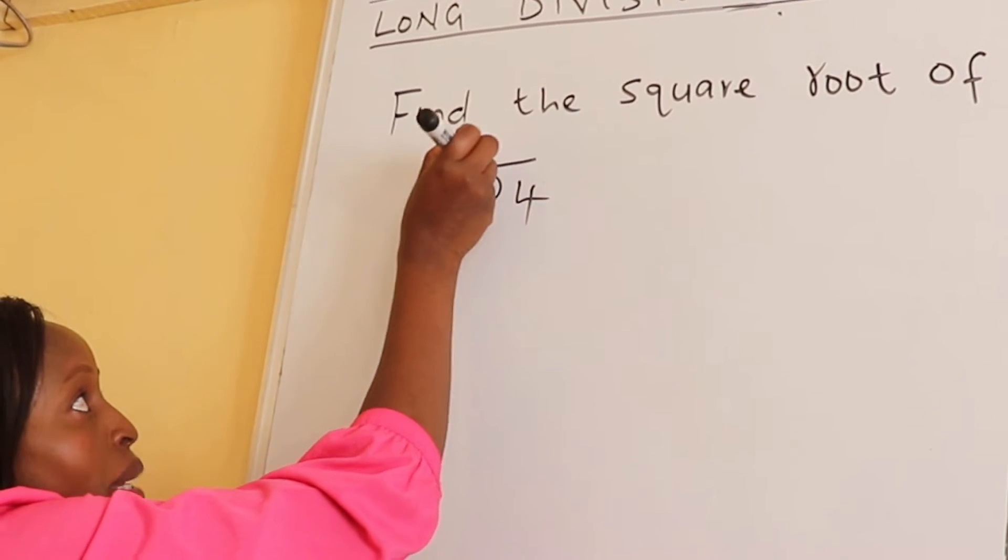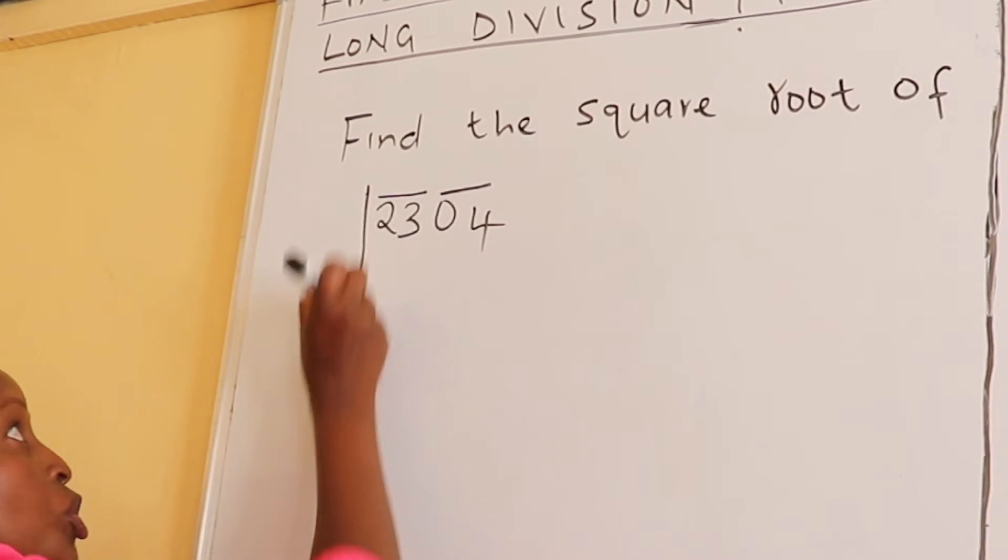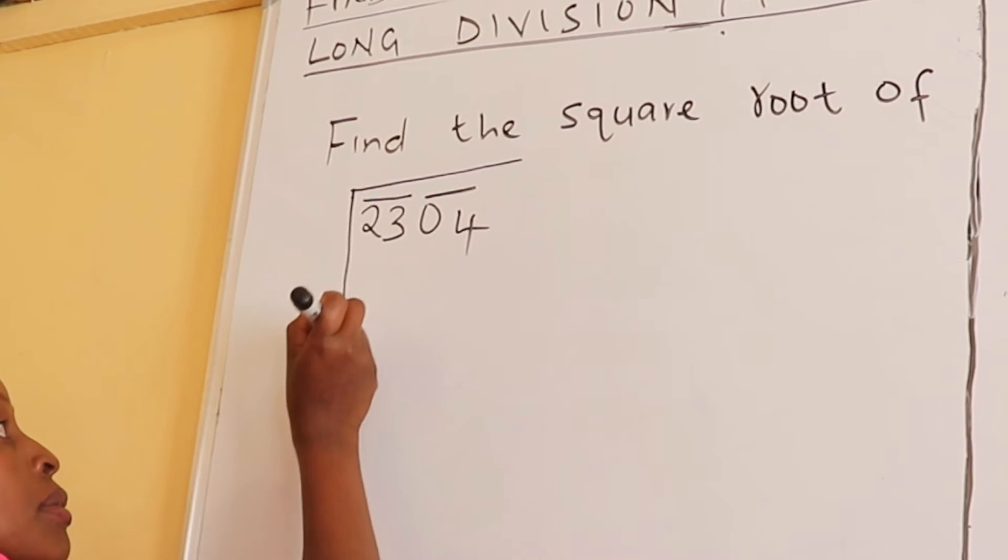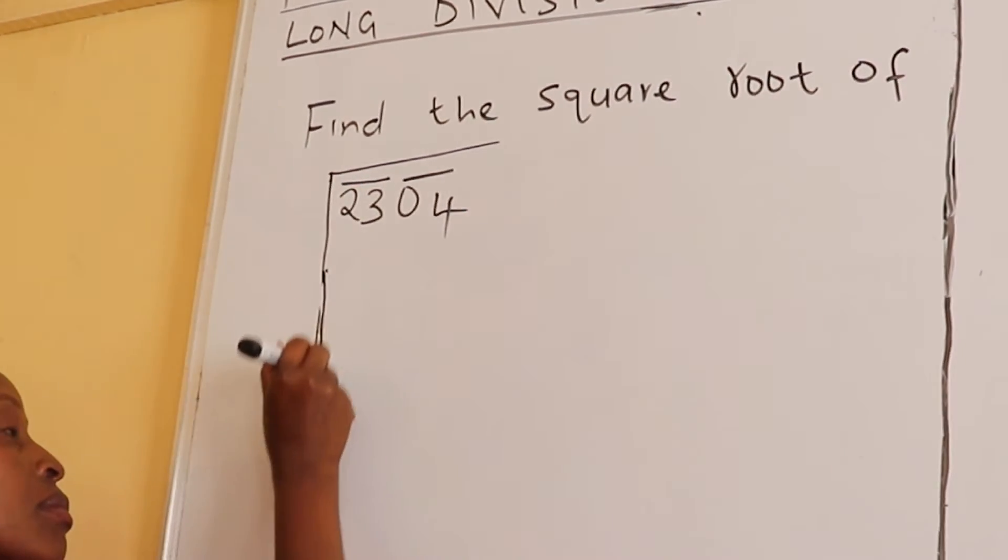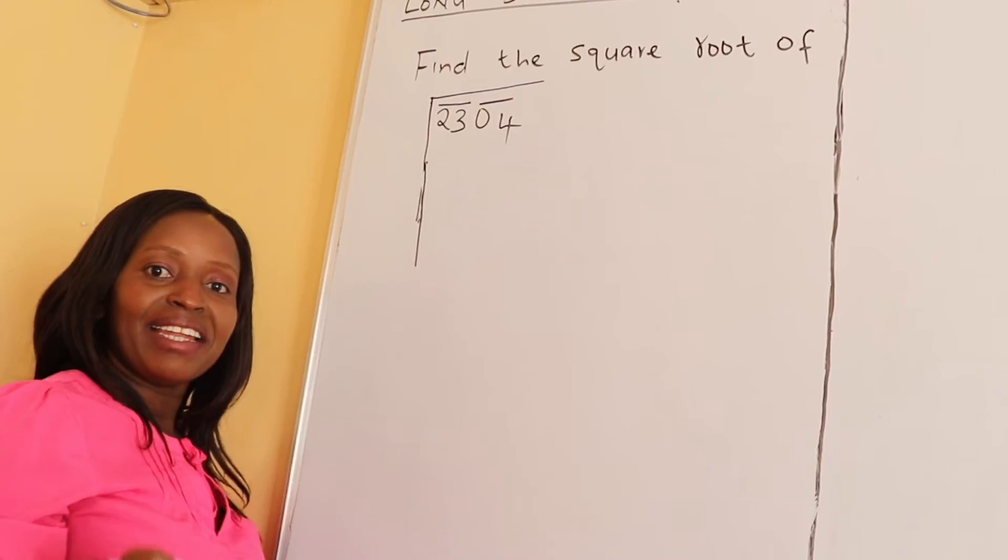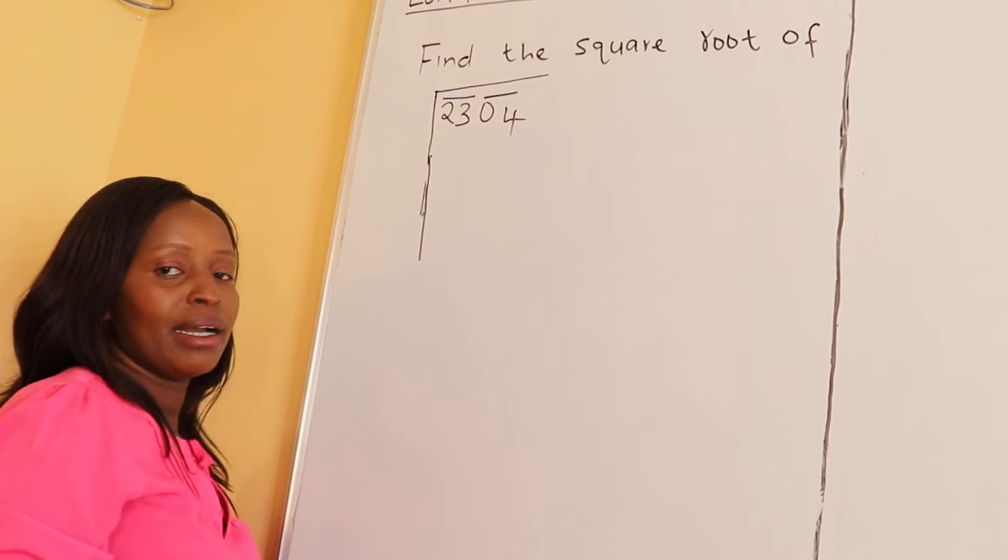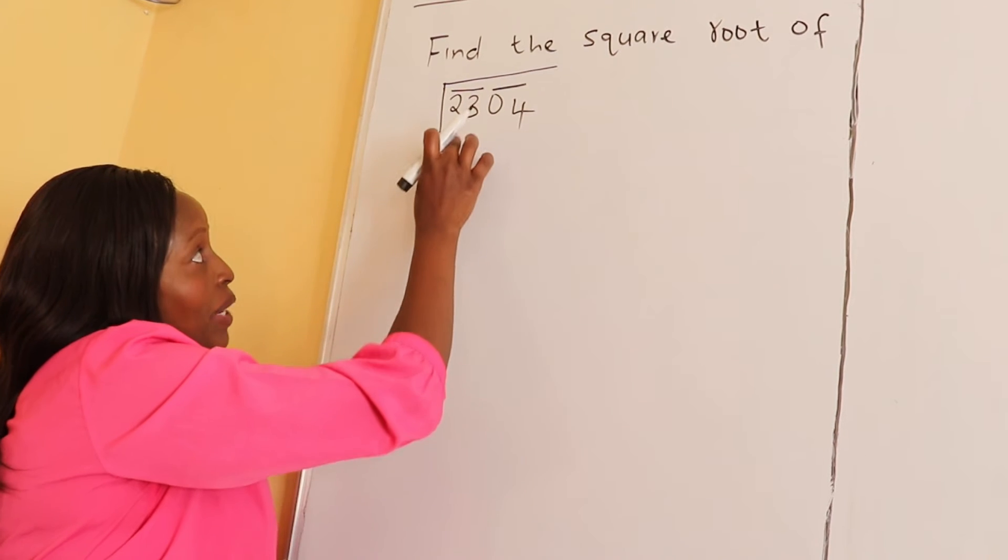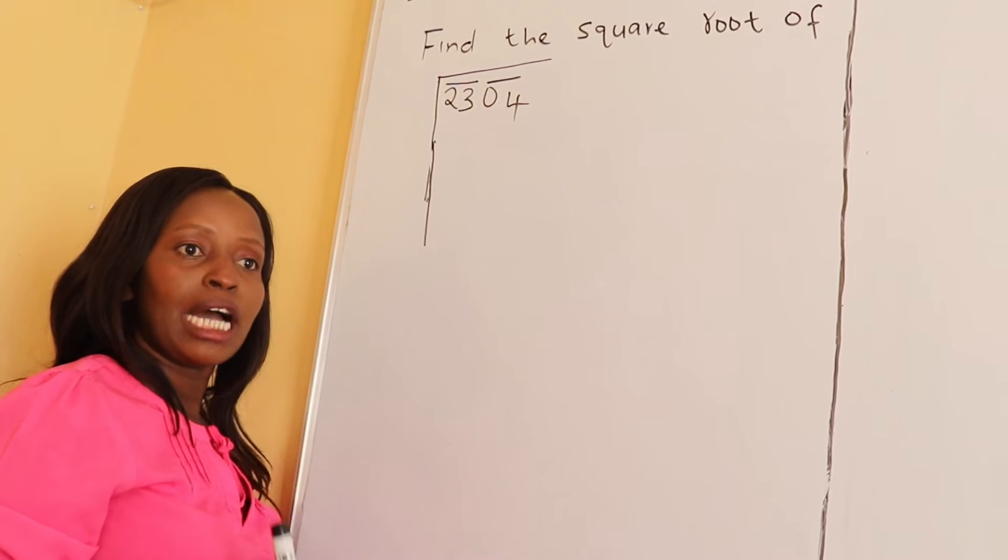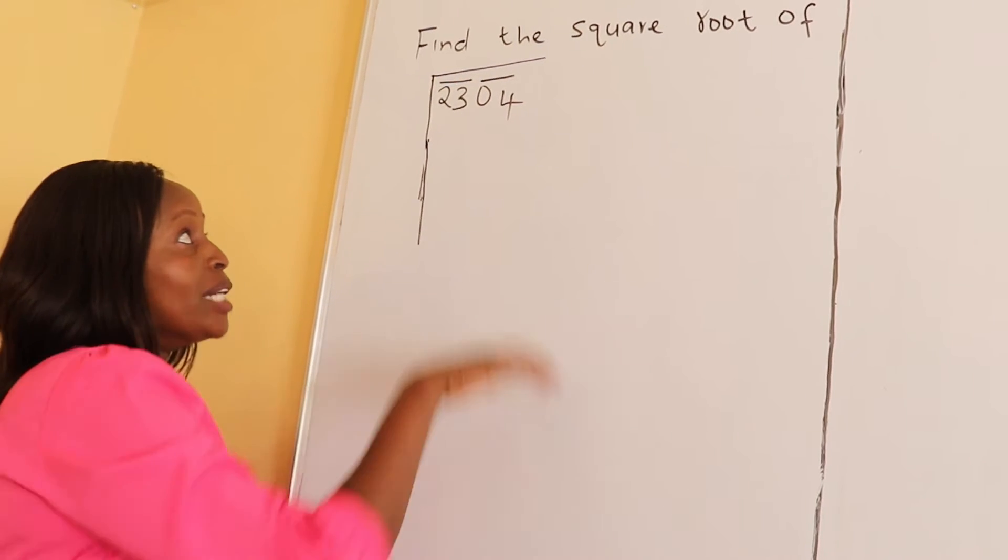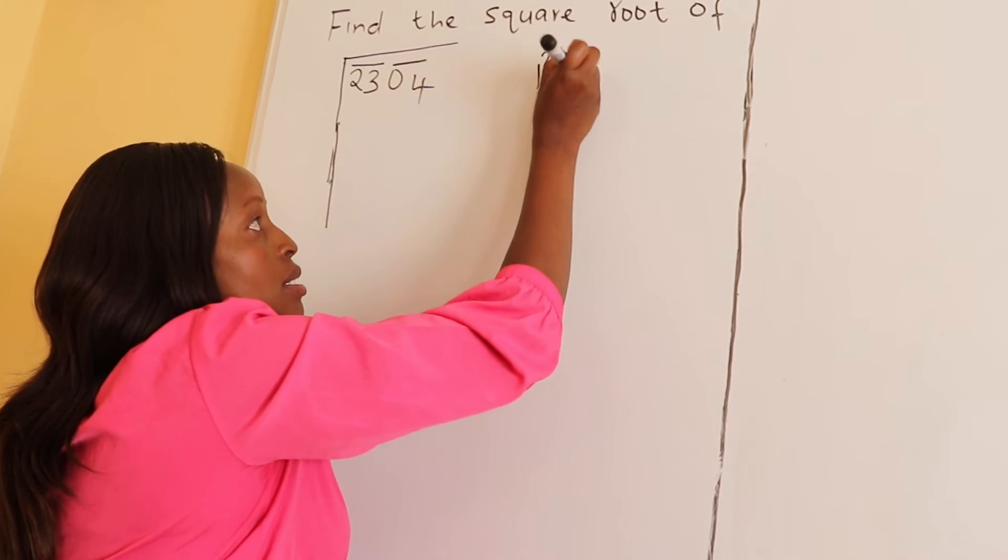After that, now you put the long division sign. Then you come to the left hand side whereby we have the first pair, and our first pair is 23. Now you look at a perfect square that is near 23.